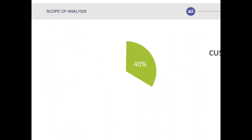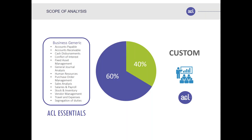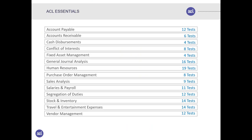From a scope perspective, 40% of what gets analyzed is done on a custom basis, performed either by staff we train or using ACL's service team to write those analytics. But 60% of what every organization manages is standard — these are the ACL Essentials: standard process-based analytics based on best-practice audit procedures, covering areas like accounts payable, vendor management, human resources, and more.